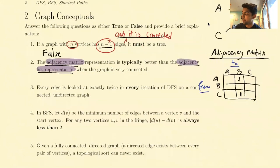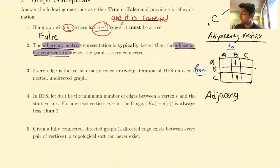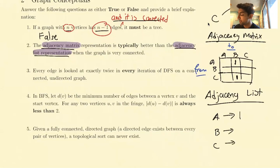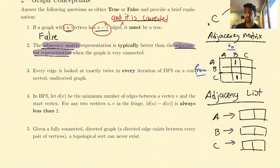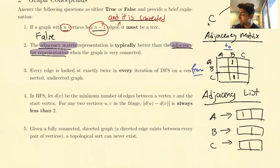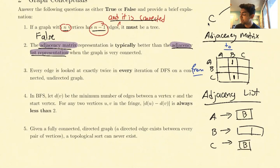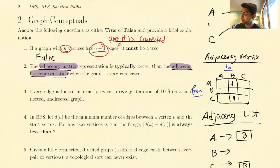Another way of representing this graph is using an adjacency list. For each vertex A, B, and C, we have a corresponding list. The list for A is all of the neighbors of A - all the things that A points to. In this case, the only member of A's list is B, B's list has nobody, and C's list also has B. When we actually implement this in code, we won't have extra elements - just the needed size of the list. So which one is better? Well, there's no concrete answer, but one way of representing has benefits over the other.